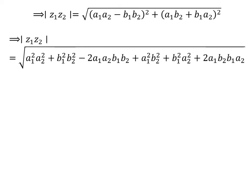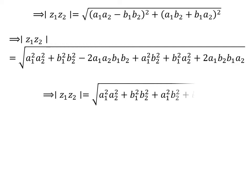Here, I have expanded each of the square terms. We get this expression after cancelling out minus 2·a1·a2·b1·b2 against plus 2·a1·b2·b1·a2, which are equal and opposite cross terms.